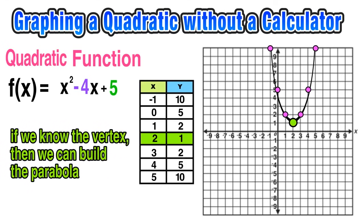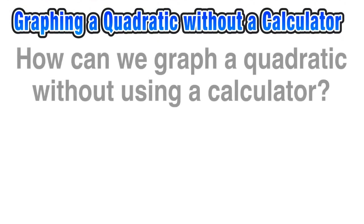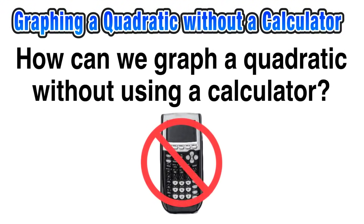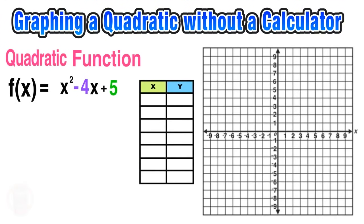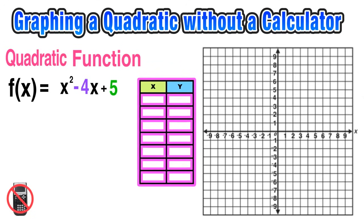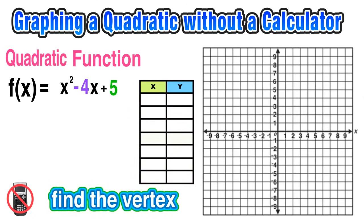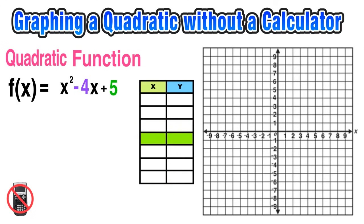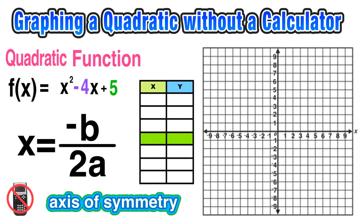If we know the vertex, we can build the parabola and graph the quadratic function. Now let's take this further and explore how to graph a quadratic without using a calculator. We'll revisit f of x equals x squared minus 4x plus 5. To do that we need a table of values, so the first thing we want to do is find the vertex. There is a formula: x equals negative b over 2a, which is the formula for finding the axis of symmetry of a parabola.